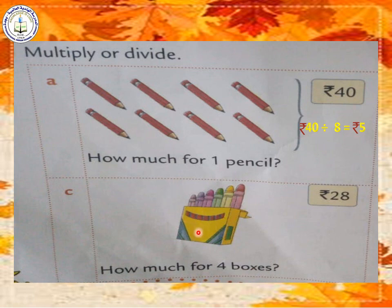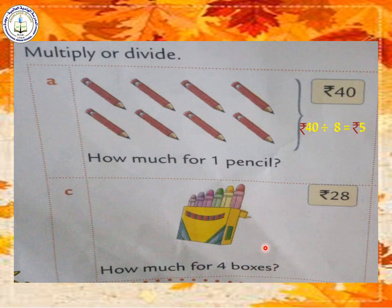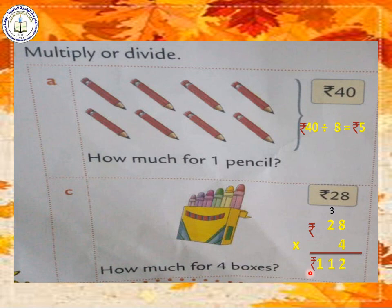Second question: the cost of 1 packet of crayons is rupees 28. We have to find the cost of 4 boxes. The cost of 1 is given and we need to find the cost of many — so we multiply. Take 28 four times: 4 eights are 32, write 2 carry 3; 4 twos are 8, plus 3 is 11. The answer is rupees 112 for 4 boxes.